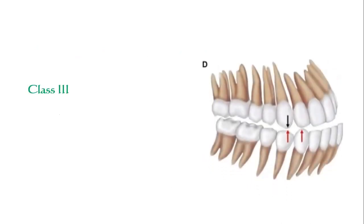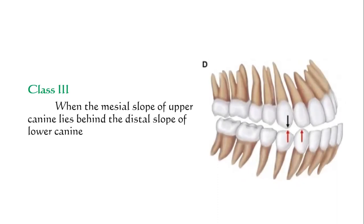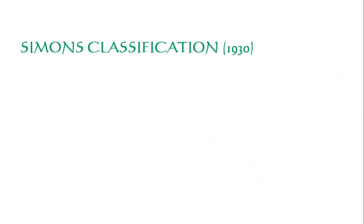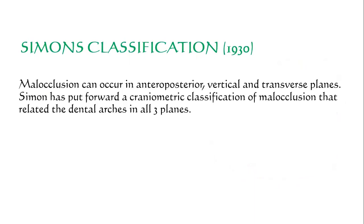Class II canine relationship is also when the mesial slope of the upper canine is ahead of the distal slope of the lower canine. Class III canine relationship is when the mesial slope of the upper canine lies behind the distal slope, or when it lies in between the two molars. This is Simon's classification.